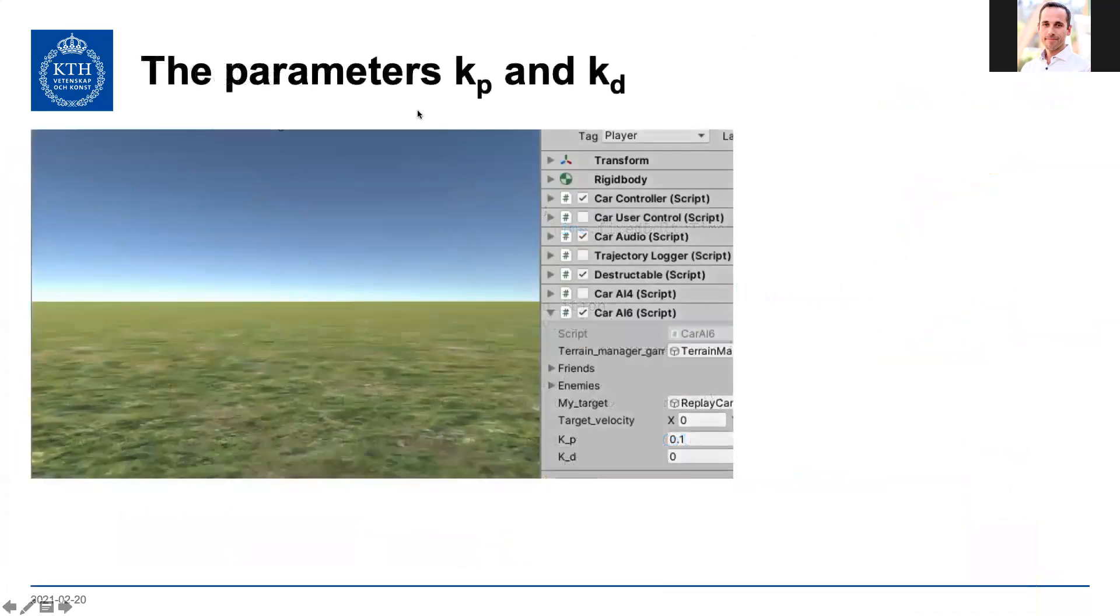So what about the parameters kp and kd? p is proportional to the position error, and d is differential, that is the velocity error.